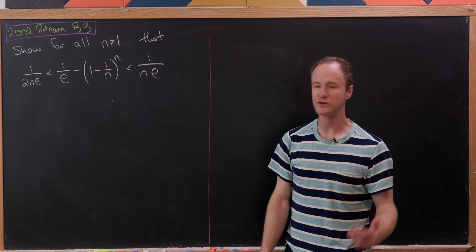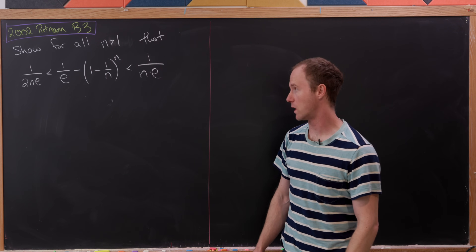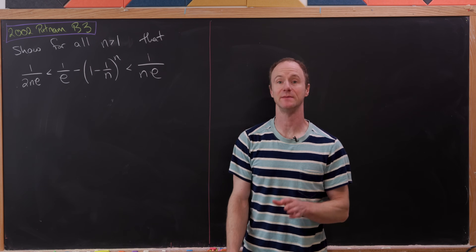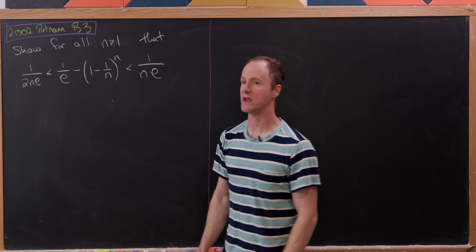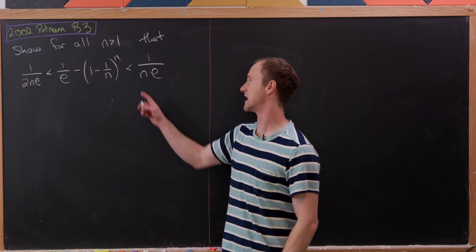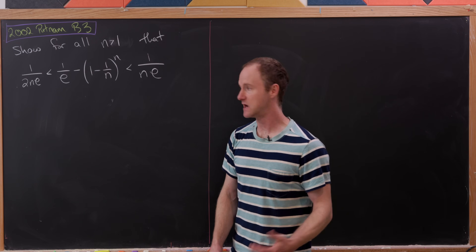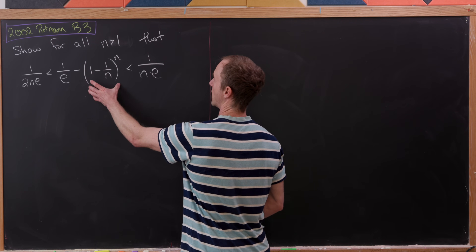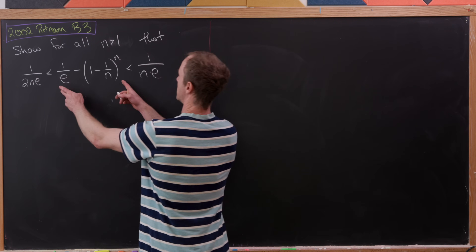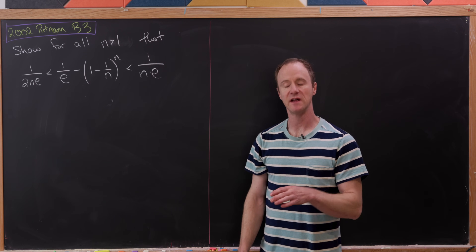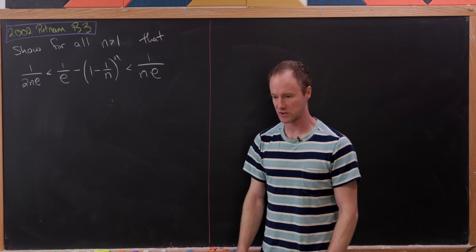Let's look at this nice inequality problem from the 2002 Putnam exam. We'd like to show that for all n greater than 1, we have 1 over 2ne less than 1 over e minus (1 minus 1/n)^n, which in turn is less than 1 over ne. As n approaches infinity, (1 minus 1/n)^n approaches 1/e, so the middle expression must approach 0 — as expected by the squeeze theorem, since the left and right sides also approach 0.